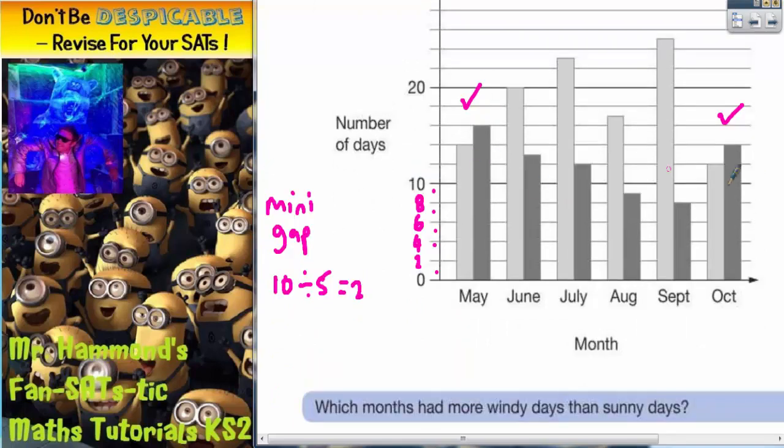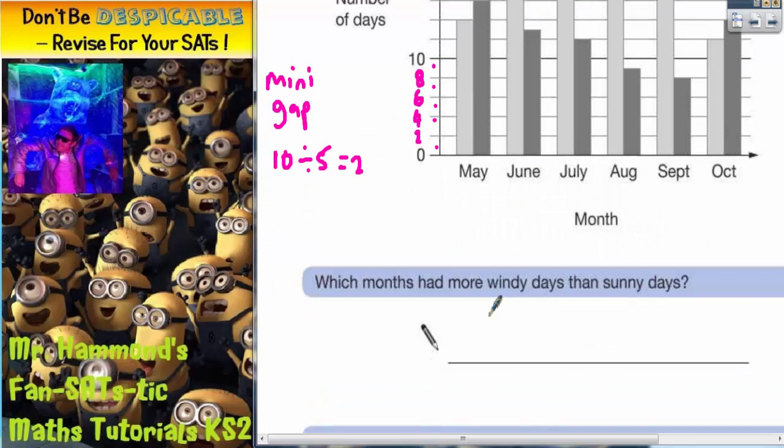So it's May and October. At this point, it is worth pointing out that it does say which months, it doesn't say how many months. So if you just put two there, you're not actually getting the question right. Because you've got to name the months and it's May and October.